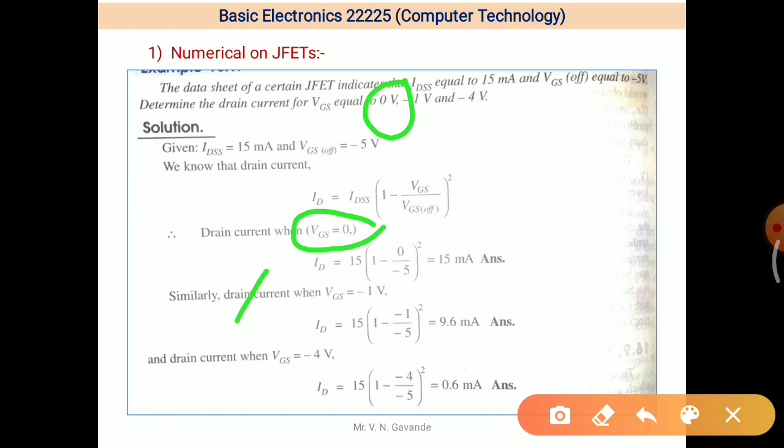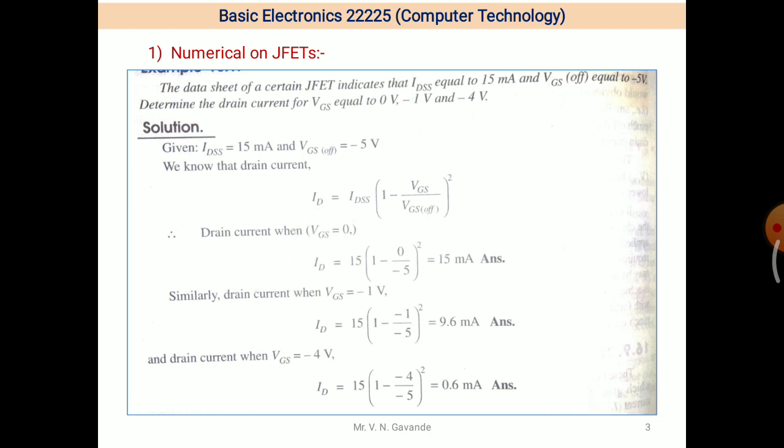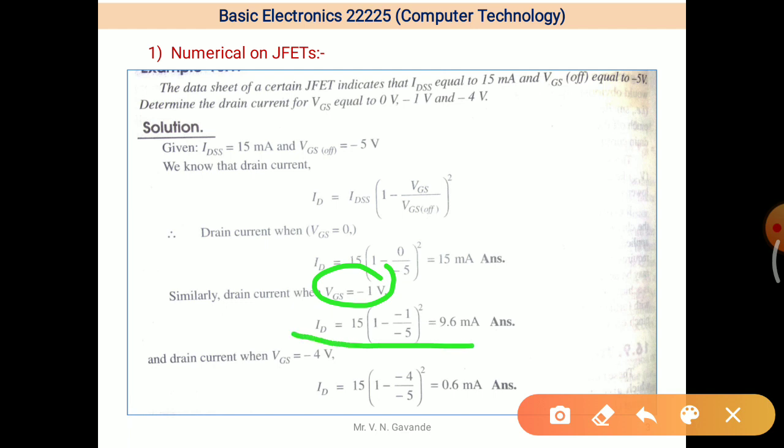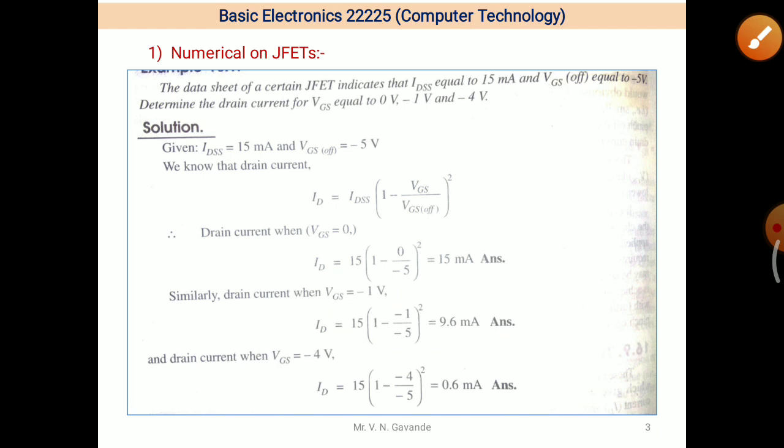Then for second current for VGS is equal to minus 1 volt, same formula. Substitute the value of IDSS and VGS OFF. ID is equal to 15 bracket square, inside the bracket 1 minus minus 1 divided by minus 5. Minus minus will be cancelled, so in bracket 1 minus 1 upon 5, when multiplied by 15, the answer is 9.6 mA.